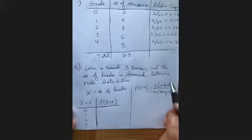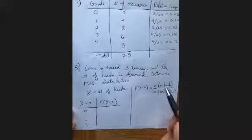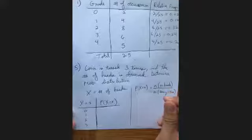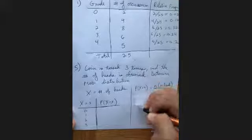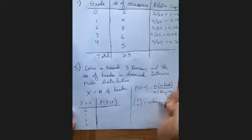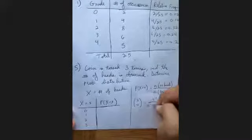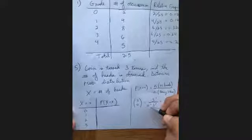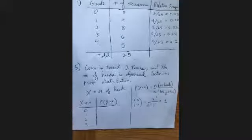When we ask about the number of ways of getting no heads, that's equivalent to saying zero of the three slots will have heads. That is the same as three choose zero, which is 3! over (0! × 3!). Since zero factorial is defined to be one, the three factorials cancel and that leaves us with one — so there's exactly one way to get no heads.